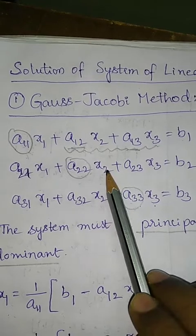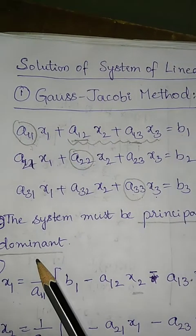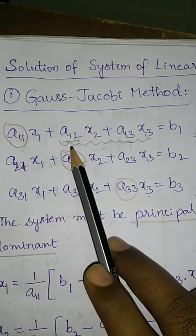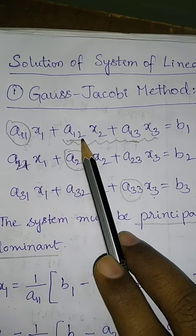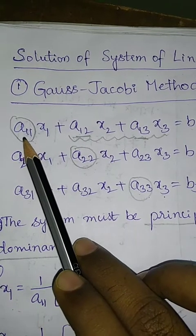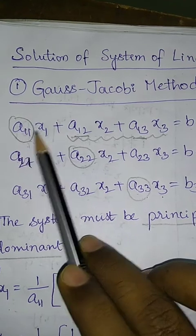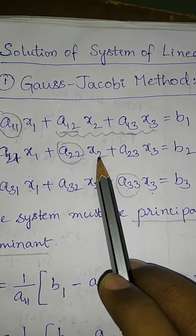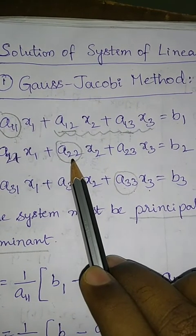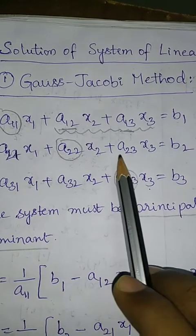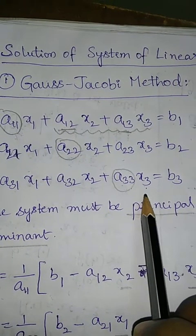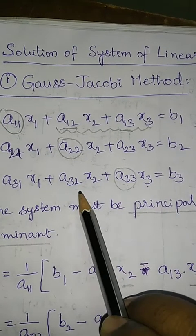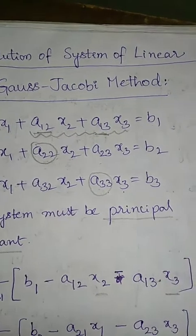What is principal dominant? In the first equation, the coefficient of x1, that means a11, must be dominant — a11 is greater than a12 and a13. In the second equation, the coefficient of x2, that is a22, is dominant: a22 is greater than a21 and a23. In the third equation, a33 must be greater than a31 and a32.